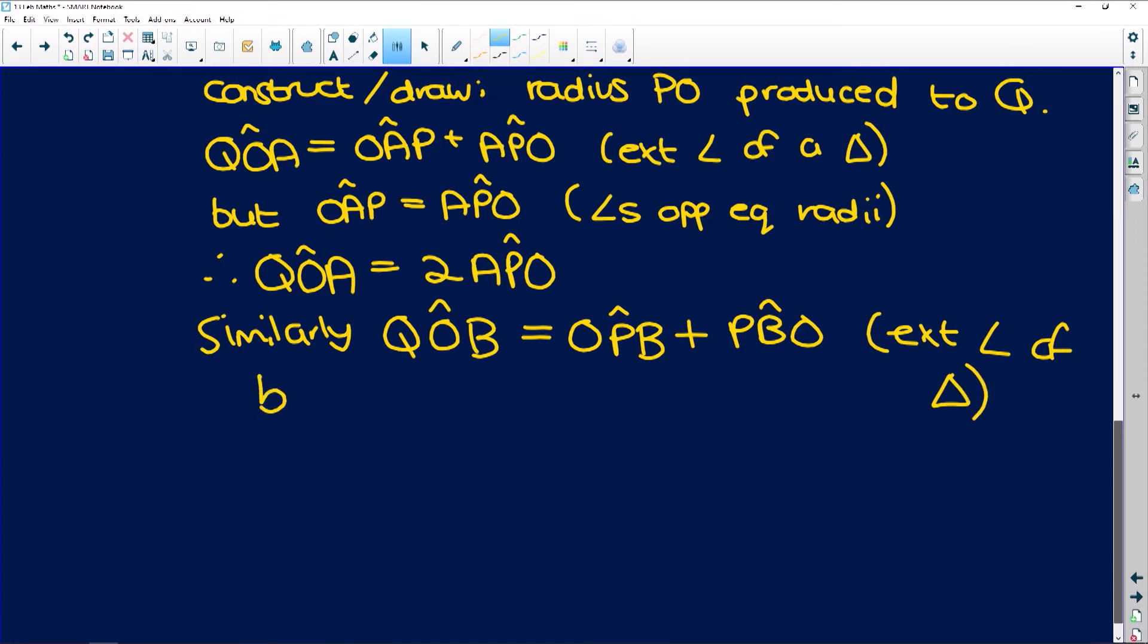But the same reasoning, OPB is equal to PBO. Why? Because they are angles opposite equal radii.